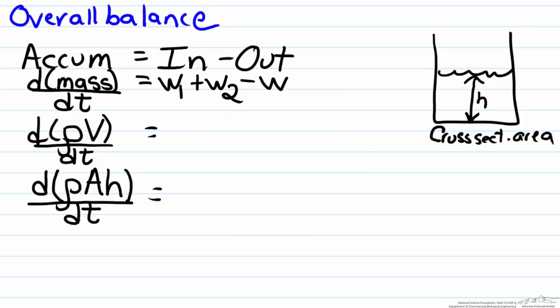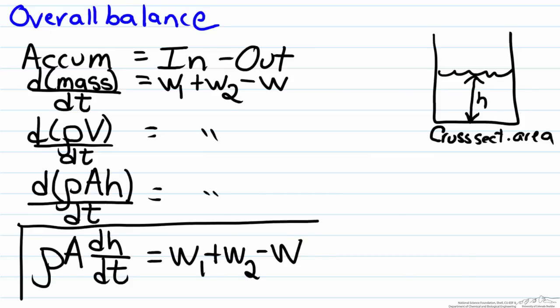For a final simplification what we can do here is factor out the ρ and the A, because they are both assumed constant. So that will leave us with our overall mass balance, and as you note here that h is in the differential, which will allow for it to be tracked as a function of time. Therefore we have our first part of our mathematical model.